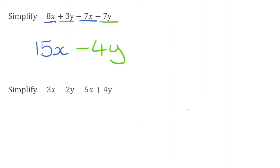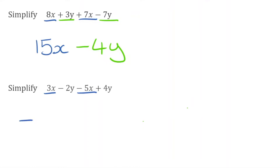For this next question, we have 3x minus 2y minus 5x plus 4y. In terms of x, we have 3x take away 5 lots of x. So 3x take away 5x is actually negative 2 lots of x. Then for our terms of y, we have negative 2y and we're going to add 4y. So if I do negative 2 and I add on 4, that actually gives me positive 2, so I would have plus 2y.